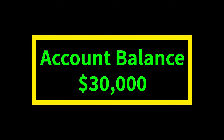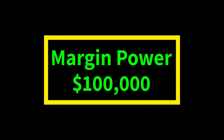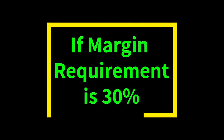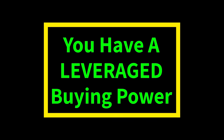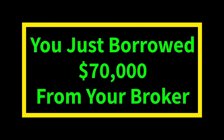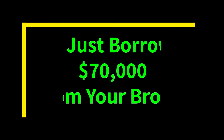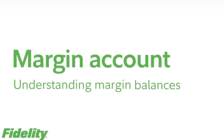That is, if you have $30,000 in your account, your broker will allow you to buy stocks worth $100,000, provided your margin requirement is 30%. That means $30,000 will bring you a buying power of $100,000. The rest of the money — $70,000 — will come to you as a loan from your broker. It is an agreement you will sign when opening a margin account.